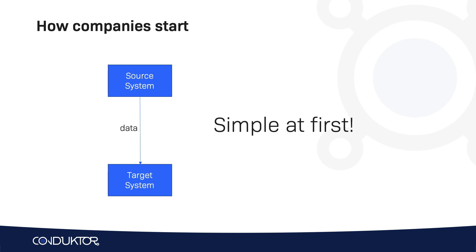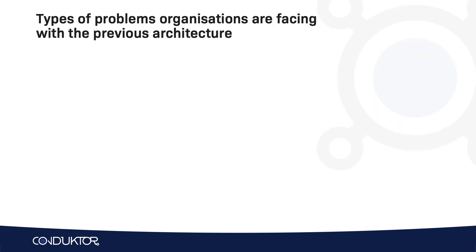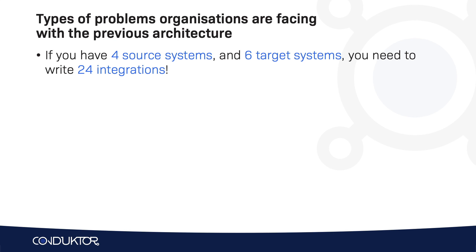But then when your company gets bigger, you're going to have a lot of source systems and a lot of target systems, and integrating them all together is going to be very complicated. You're going to have many more integrations to write, and each integration is going to come with its own set of challenges. For example, if you have four source systems and six target systems and you want to integrate them all together, you will need to write 24 integrations.